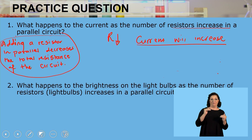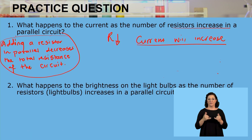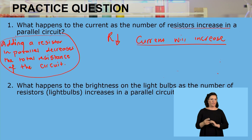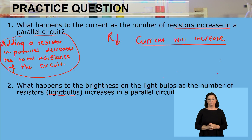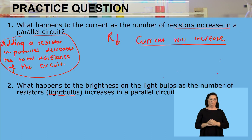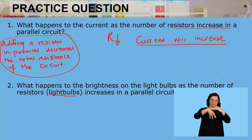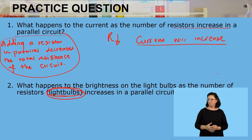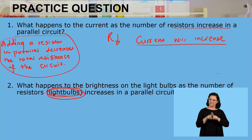Question two: what happens to the brightness of the light bulbs as the number of resistors — or basically the light bulbs — increases in a parallel circuit? As we are adding more resistors being the light bulbs in parallel, what is going to happen to the brightness of those light bulbs? Remember that if we are adding identical resistors or identical light bulbs, they will each receive the same amount of current when the current splits.